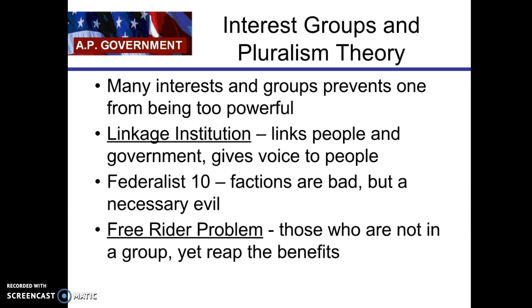Under the pluralist theory, the idea is that there are many factions or groups within society and they naturally form. Pluralism is a good thing because having multiple groups prevents one from being too powerful. This is defined in Federalist No. 10, written by James Madison, essentially saying that factions are bad but a necessary evil because they help prevent one group from becoming too powerful. Interest groups are also a linkage institution — they help link the people to the government and give voice to people, because a crowd is louder than a single person.